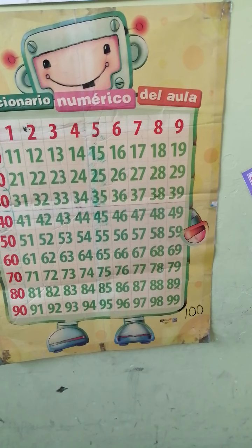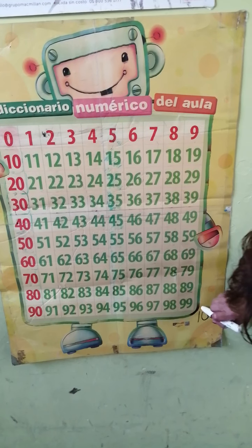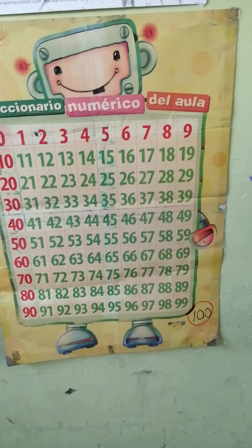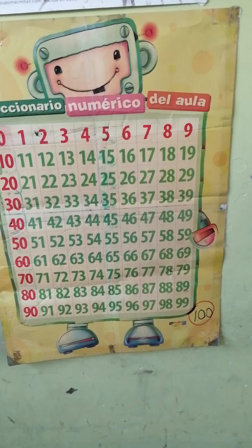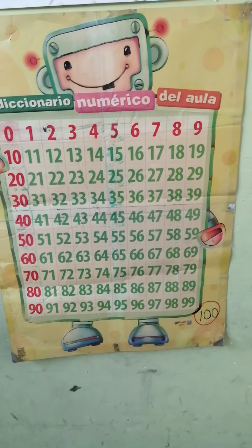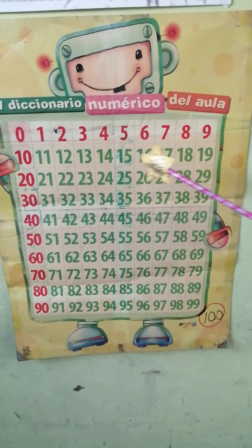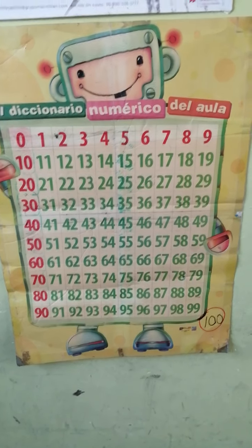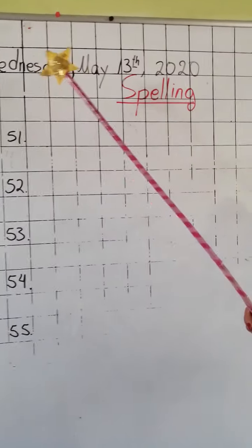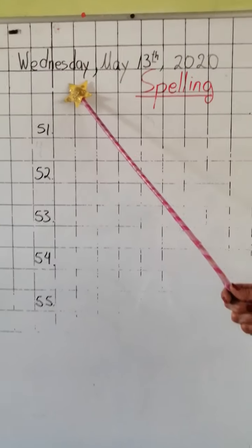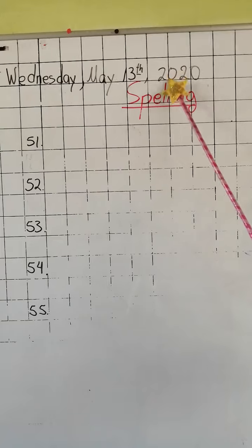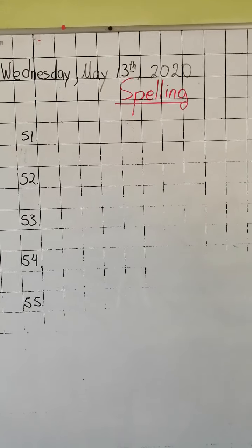Excellent, kids. I'm going to draw a circle on number 100. So, what number of days is today? Today is 13. Very good. We have here a date: Wednesday, May 13, 2020.